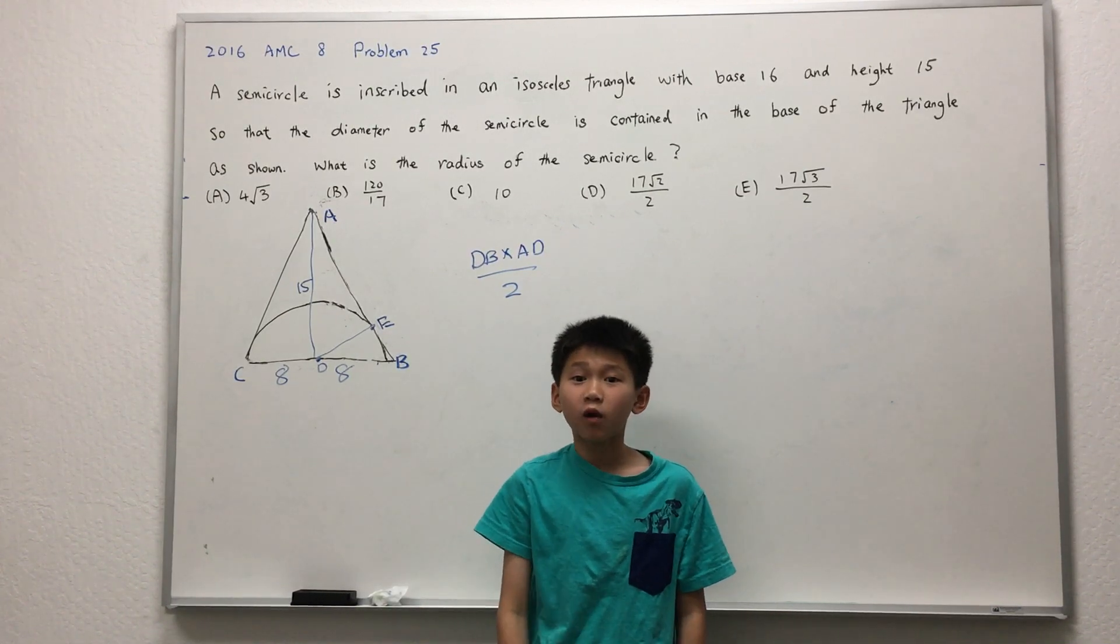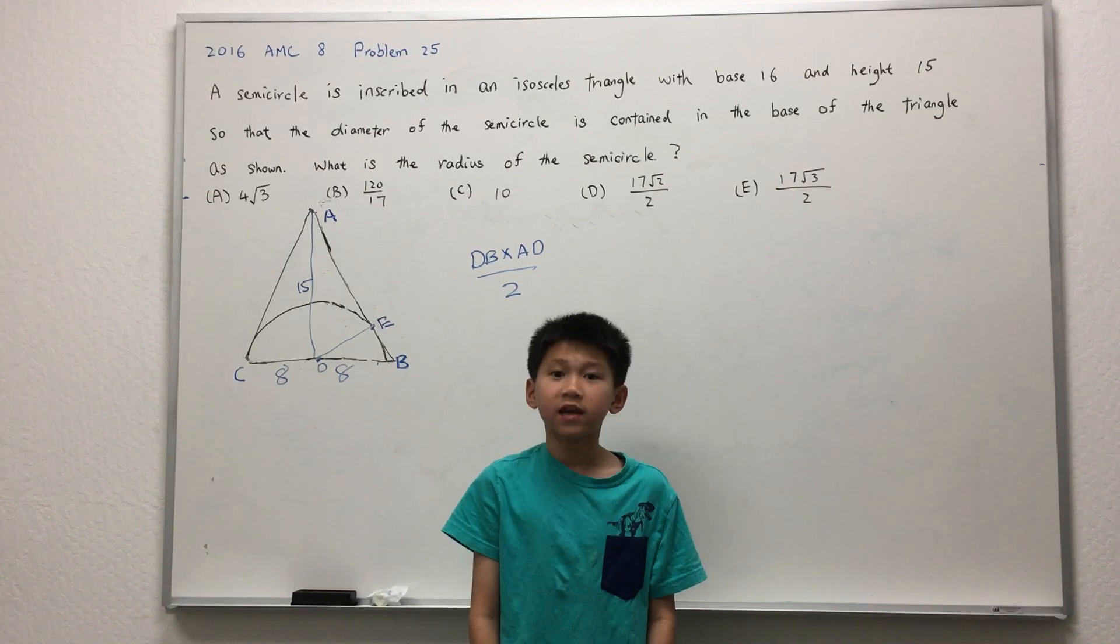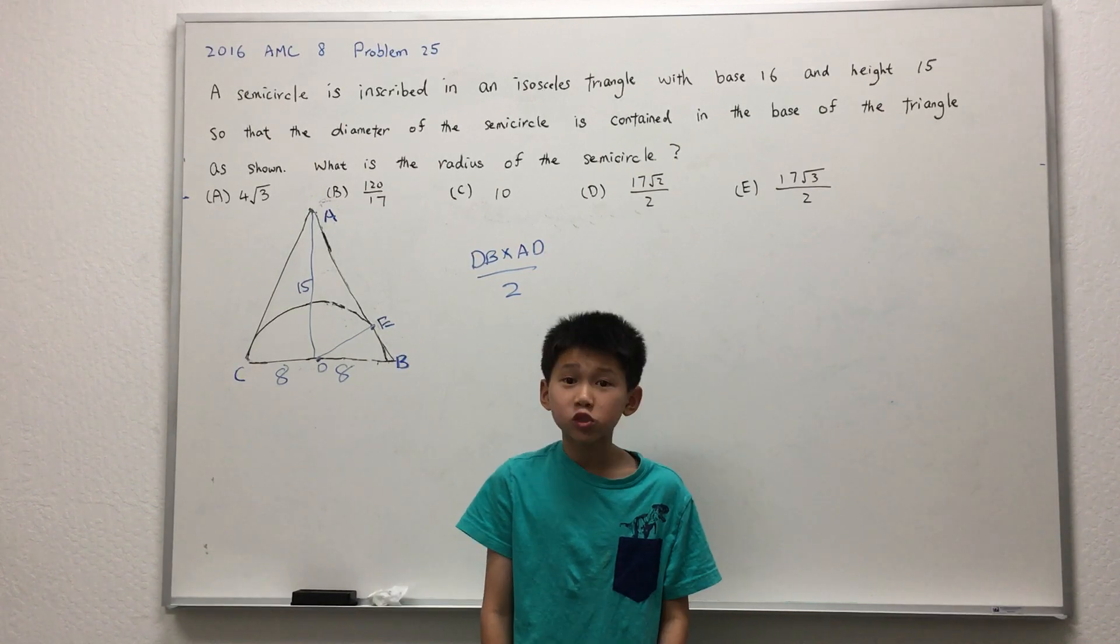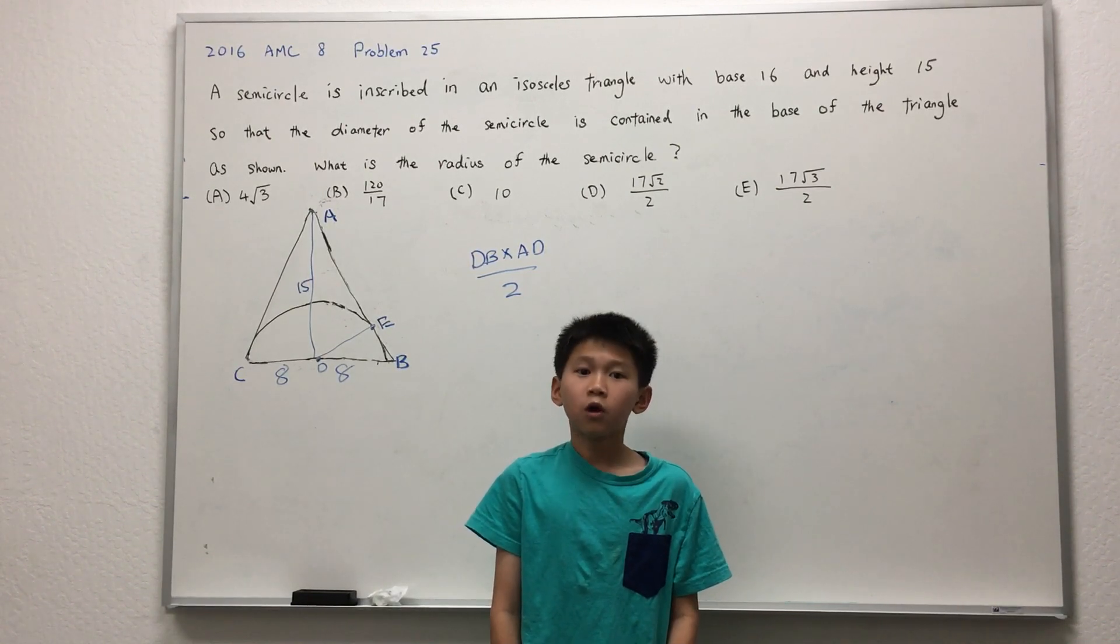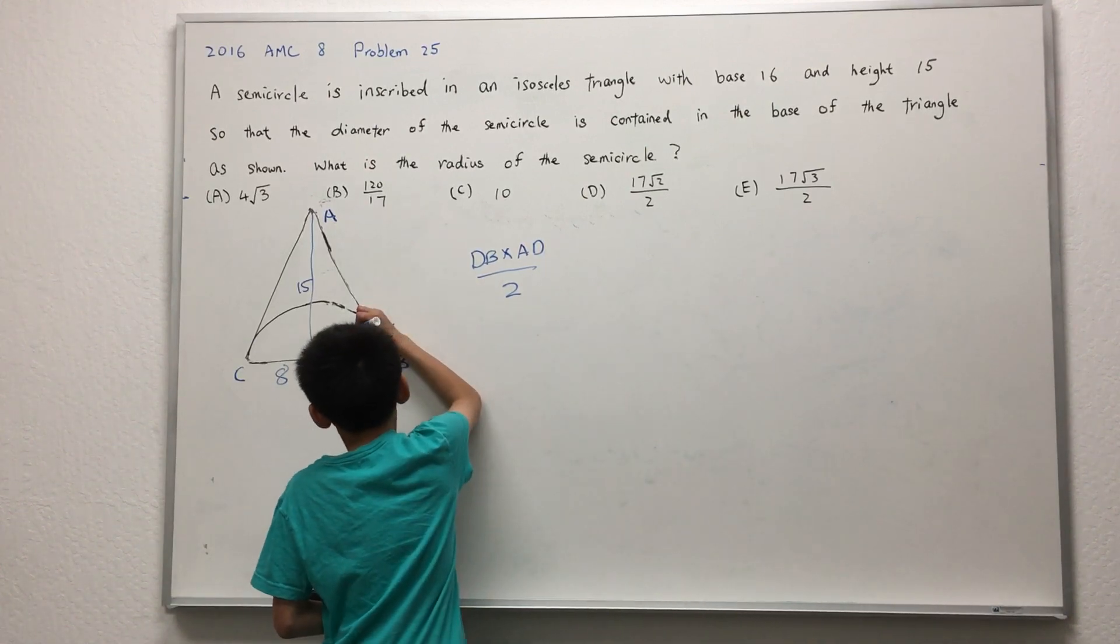Aha! We have found the secret weapon to attack this problem. Line DE is not only the height of triangle ABD, it is also the radius of the circle, which is what we're trying to find. Let DE be R.